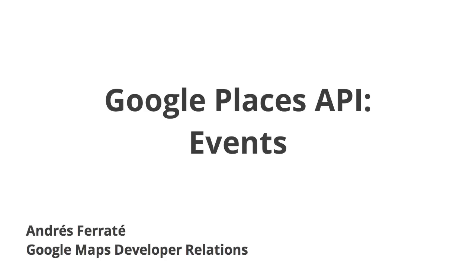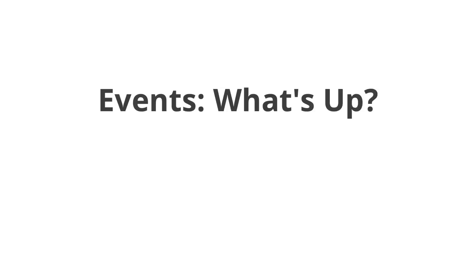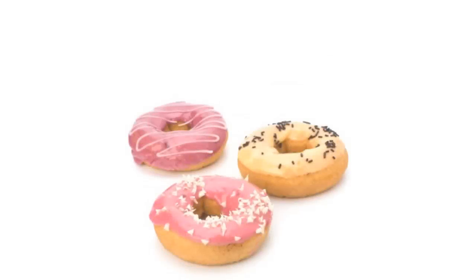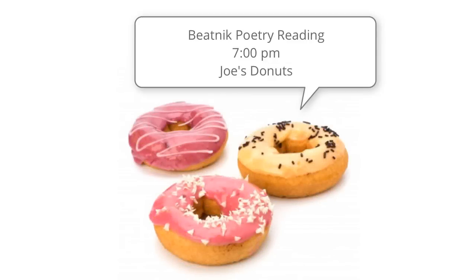We've added a new events feature to our Places API. With this new events feature, your users can add, delete, find, and check into events and places using the Places API service — say, for example, a donut shop. The events feature is accessed via HTTP using POST requests.